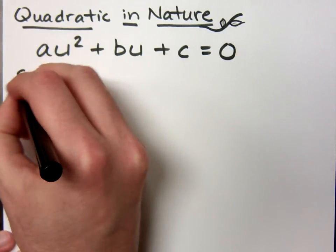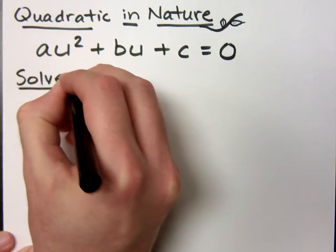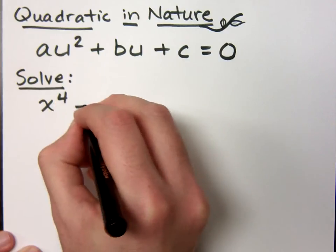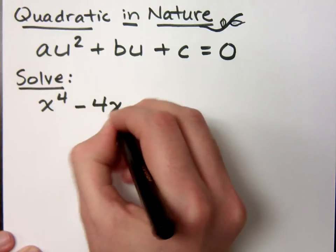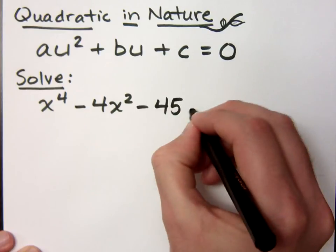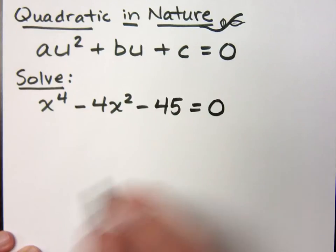For example, if I ask you to solve this equation: x⁴ - 4x² - 45 = 0. This guy is not quadratic, but it's quadratic in nature, which means we can use quadratic methods to solve this guy.